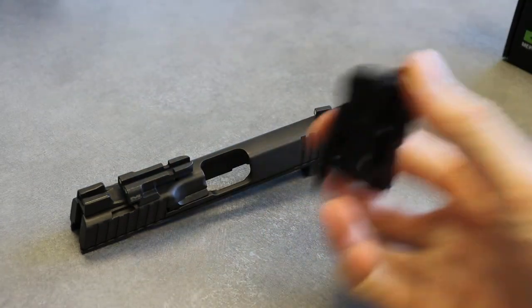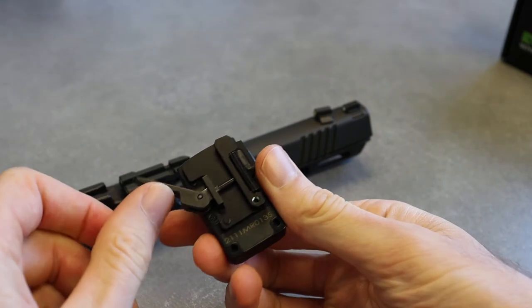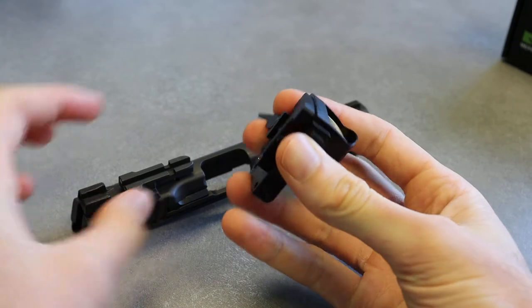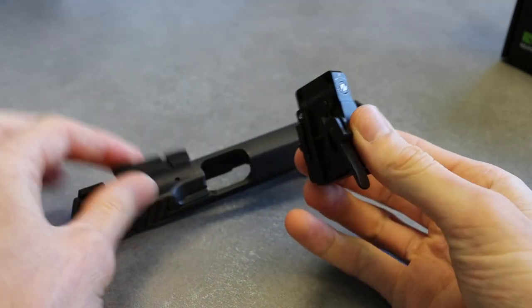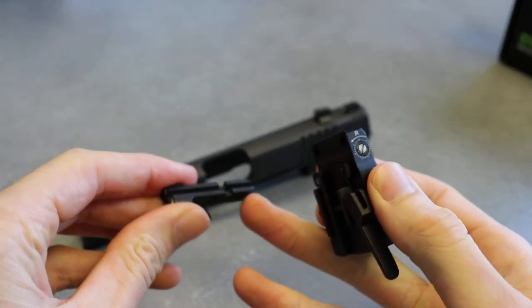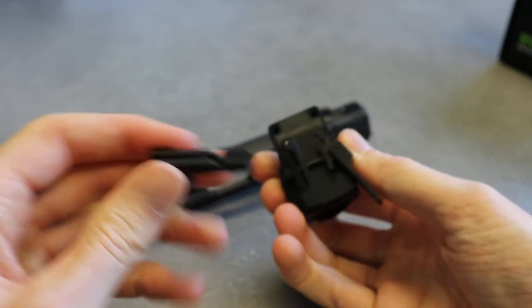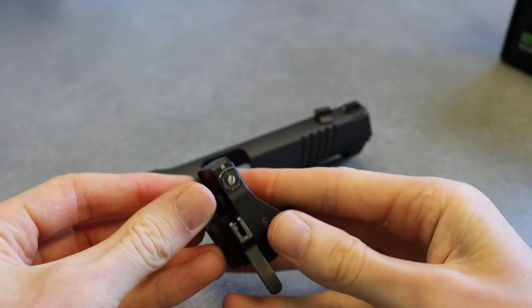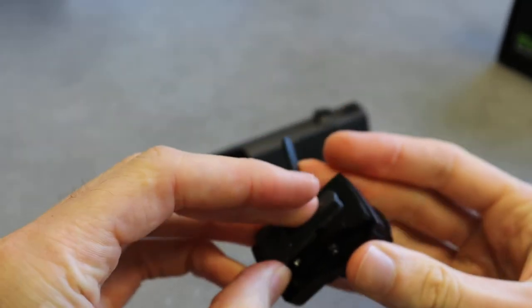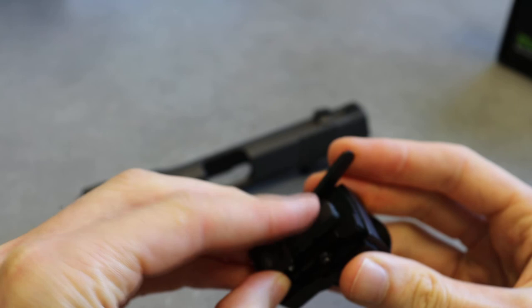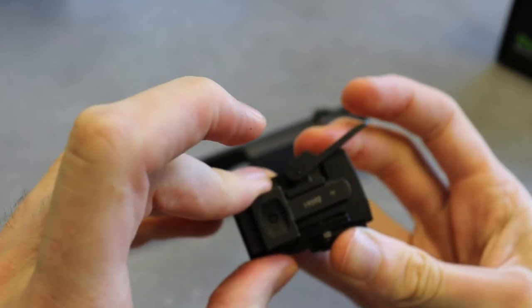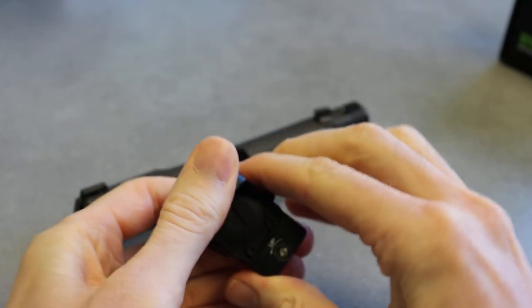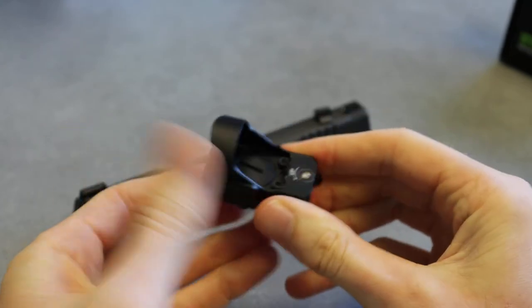This is the bottom, like a little micro QD mount. Just like with any other micro RDS, we have this long rail on the rear sight with a cutout. You just line up that bar onto the rear sight itself and close that bar nice and tight.